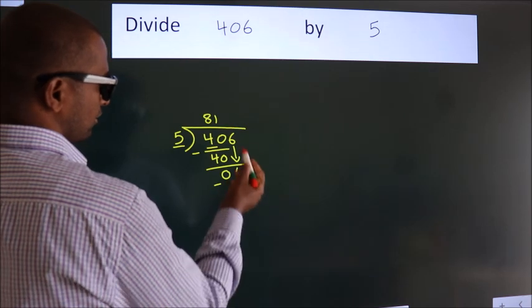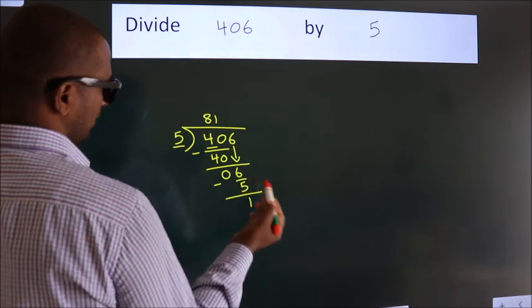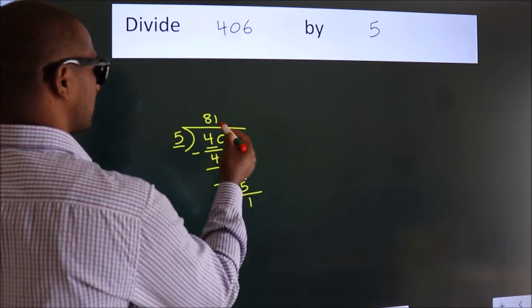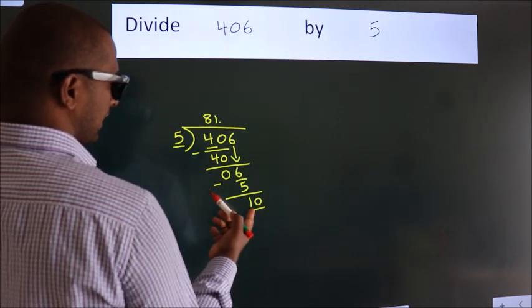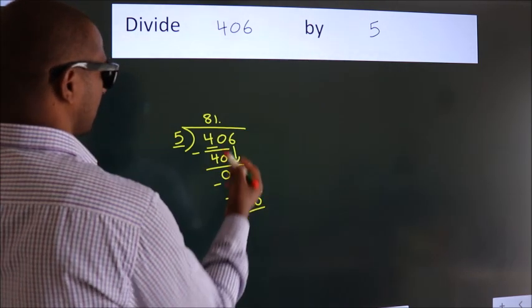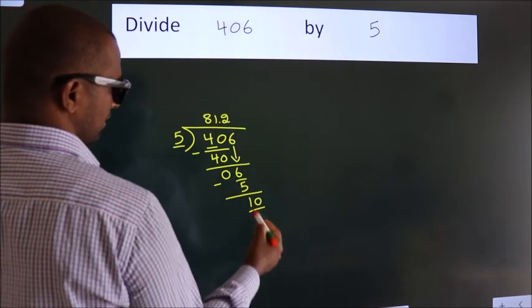After this, no more numbers to bring down. So what we do is we put a dot, take 0. So 10. When do we get 10 in 5 table? 5 twos, 10.